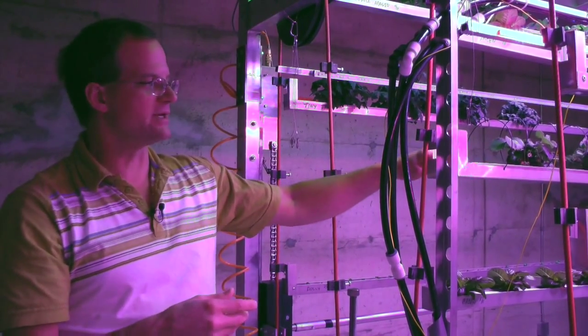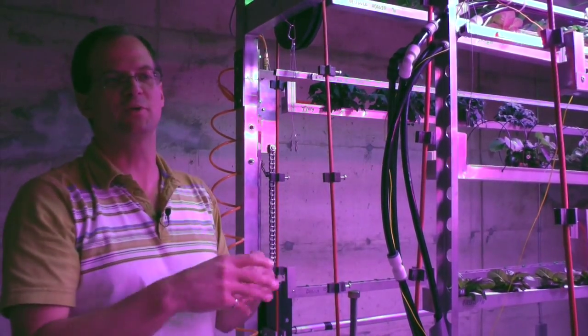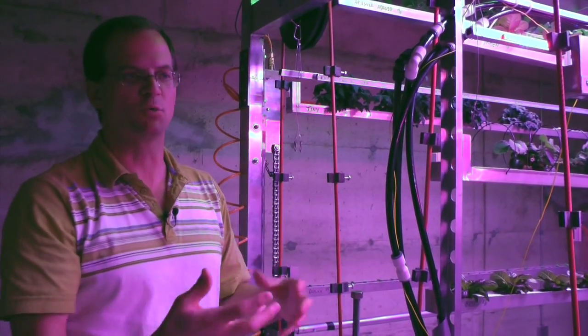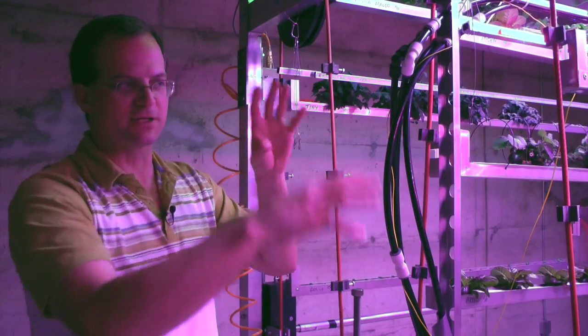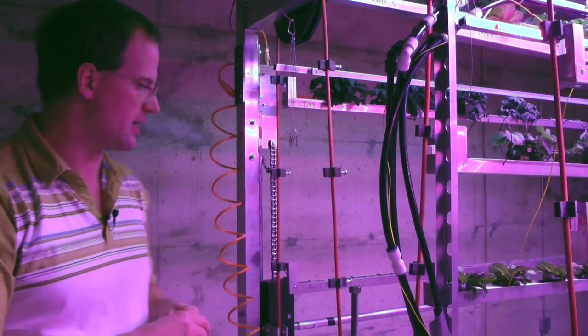Strawberries need a little bit less nutrients than some of the peppers or tomato plants do, so we can actually regulate the nutrients based on what they want. Not just a lighting regime that we can control, but we can potentially control all these factors as it moves around through the system.